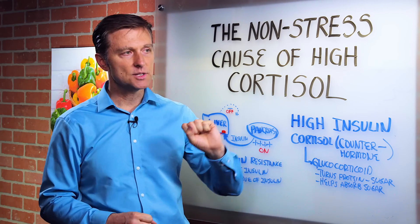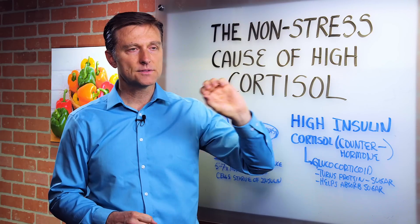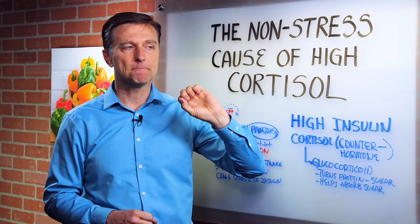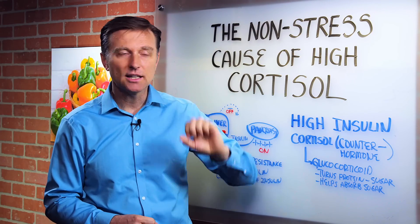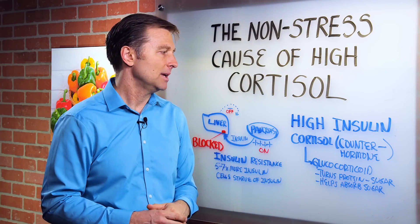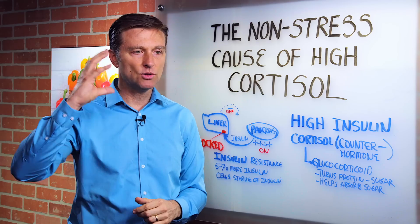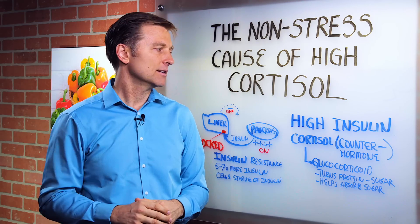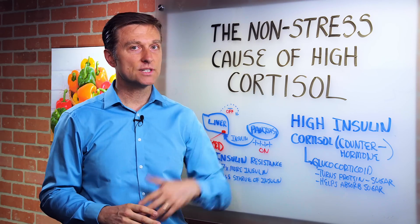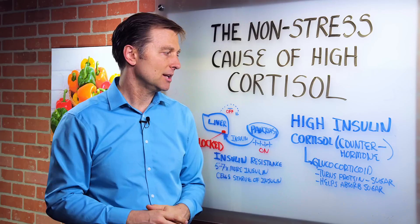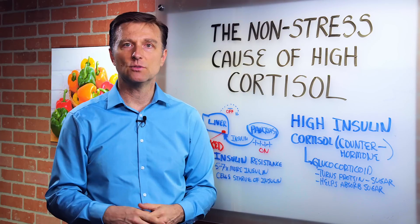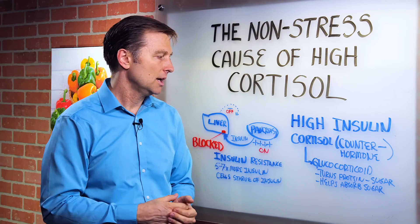Cortisol increases blood glucose to your cells for quick energy and mental acuity — very sharp thinking. But of course over time it goes the opposite, because you're going to end up with diabetes and brain fog.